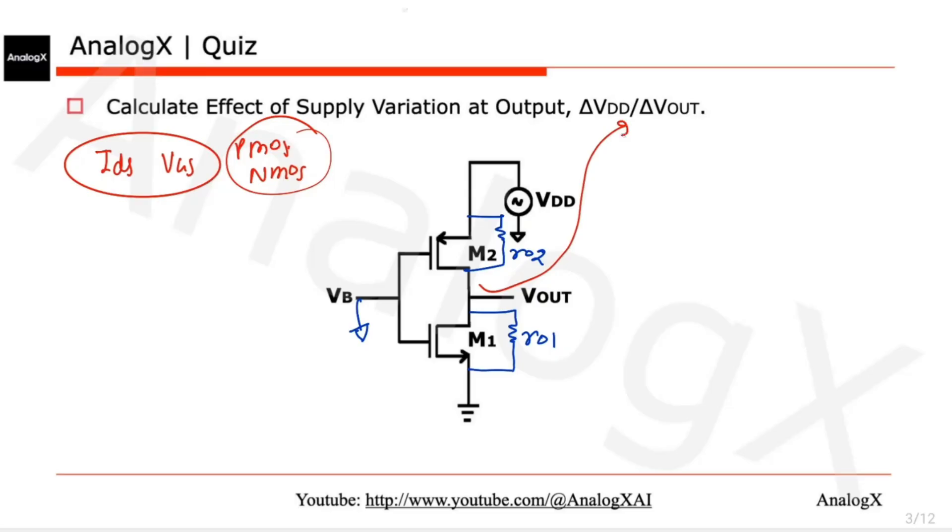Let's write one KCL equation here. Suppose this current is going down and this current is going up. That will be gm1 - I am taking VGS - so gm1 times (gate voltage is zero, source voltage is also zero) and that will be VOUT by ro1.